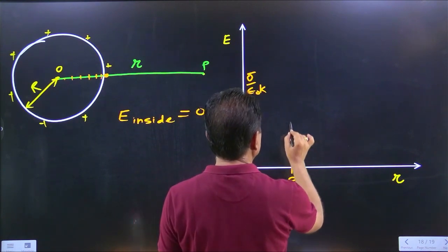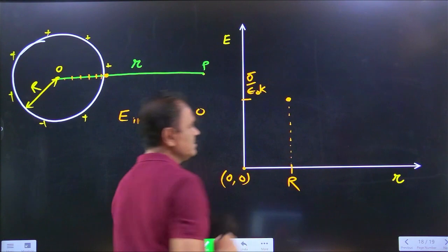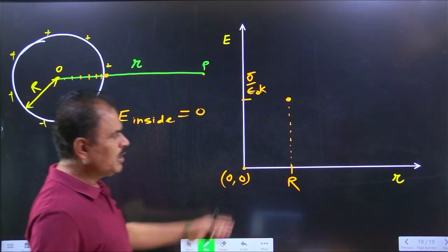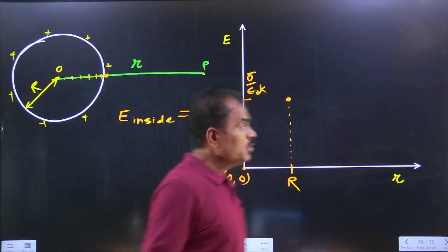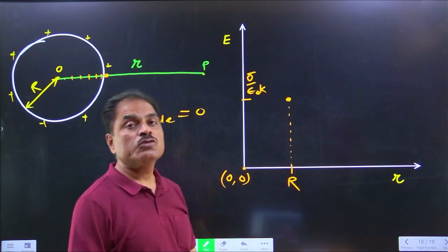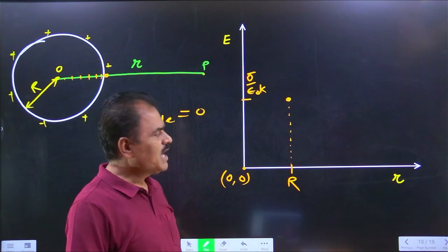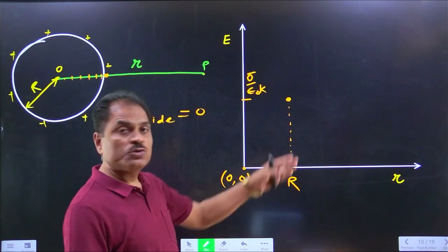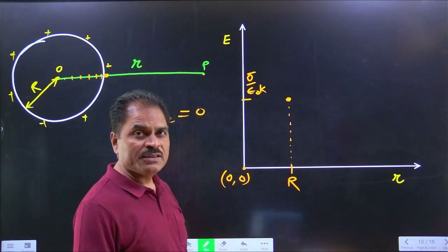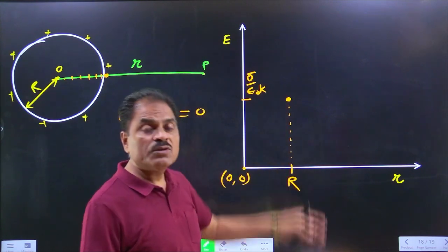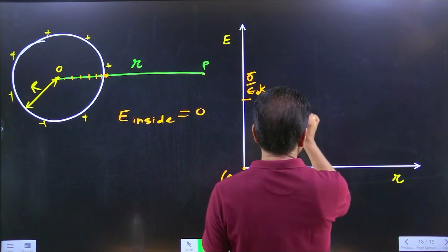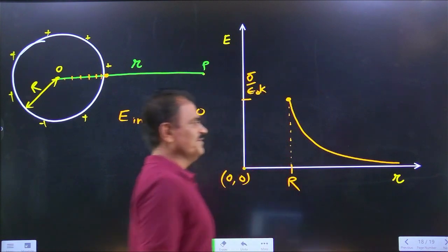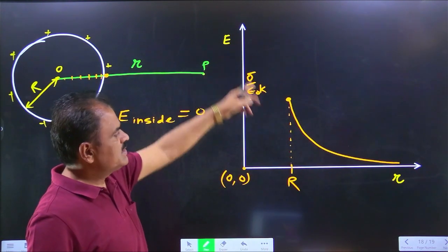All of a sudden at this point — the surface — electric intensity is maximum. If our point is at infinity, intensity is zero; and the graph from the surface outward follows a rectangular hyperbola. This is the graph of electric intensity versus distance.